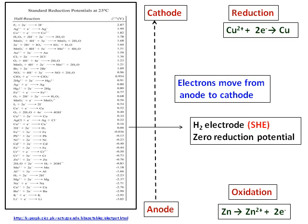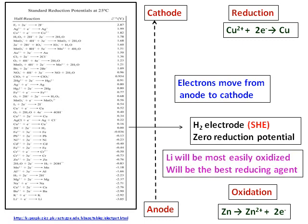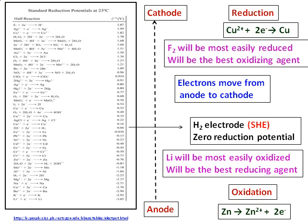Lithium will be the most easily oxidized and will be the best reducing agent. Fluorine will be the most easily reduced and will be the best oxidizing agent. We will learn how to use this reduction potential table to calculate cell potentials as we go ahead.